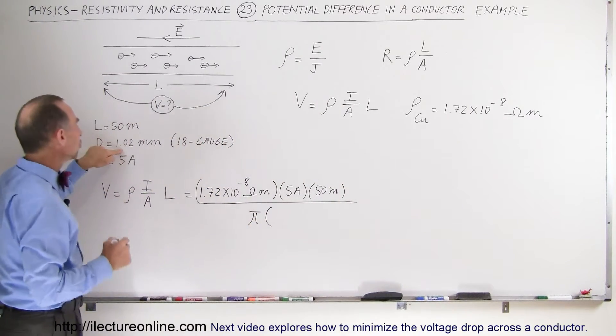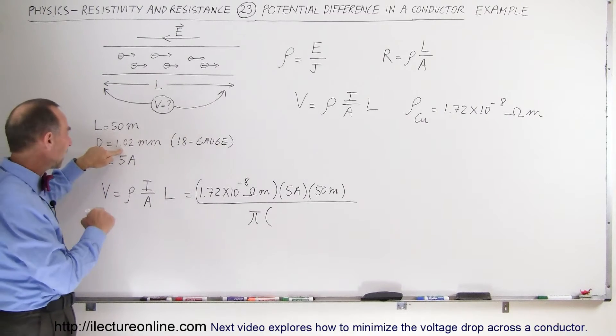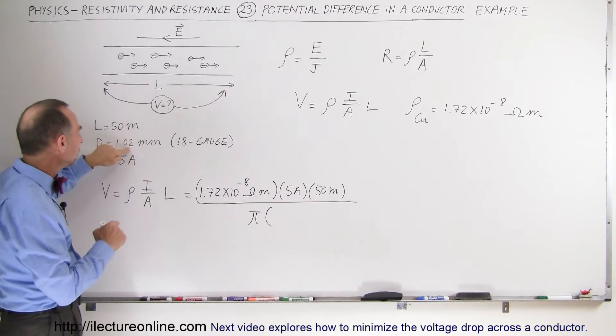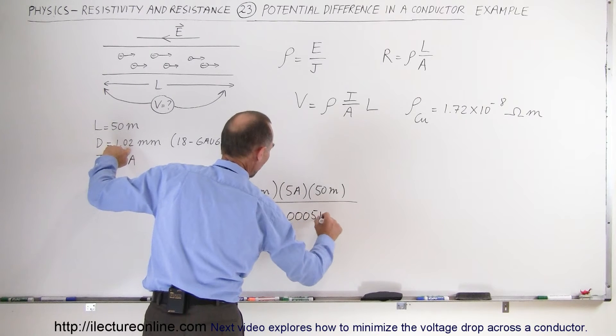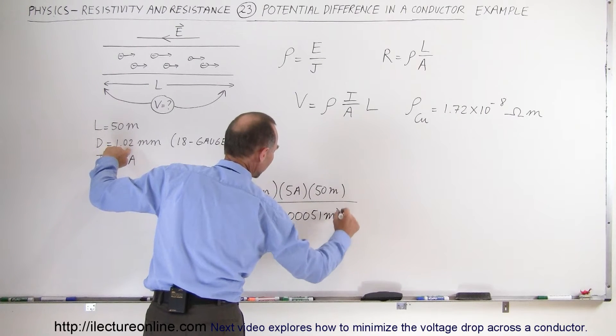And since the diameter is 1.02 millimeters the radius is half of that which is 0.51 millimeters converted to meters would be 0.00051 meters. And we have to square that.